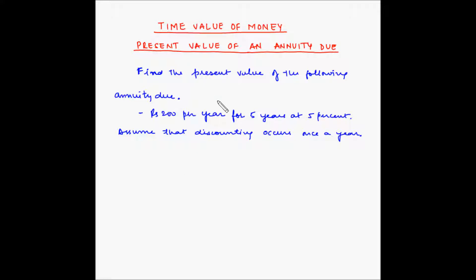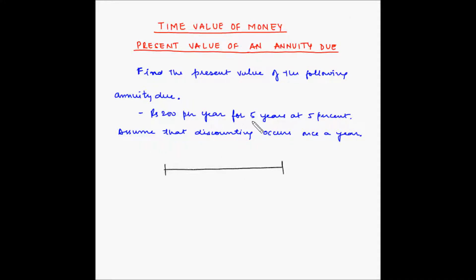The question at hand is: find the present value of the following annuity due — rupees 200 per year for five years at five percent, assuming that discounting occurs once a year. Let us draw the timescale to further understand this example. This is a five year annuity, so the periods are zero, one, two, three, four, and five. The rate of interest is five percent per annum.